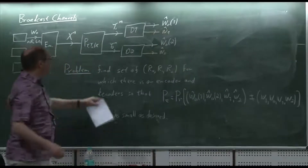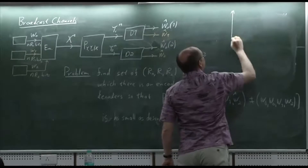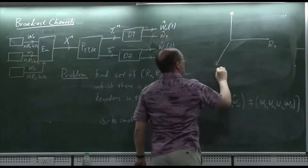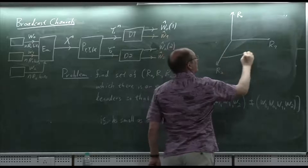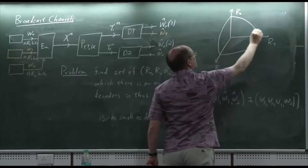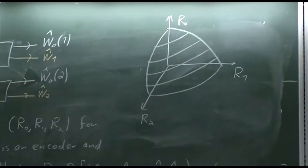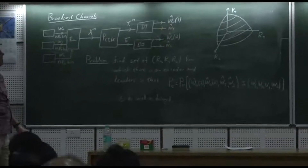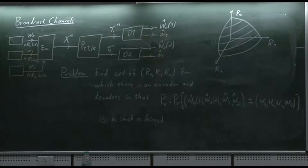The capacity region is a three-dimensional surface in (R0, R1, R2) space, and finding that surface is the goal. This problem is not solved in general today, though it is solved for the scalar Gaussian case.